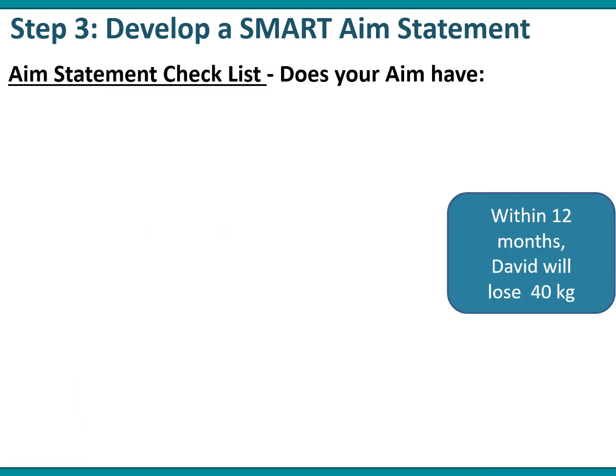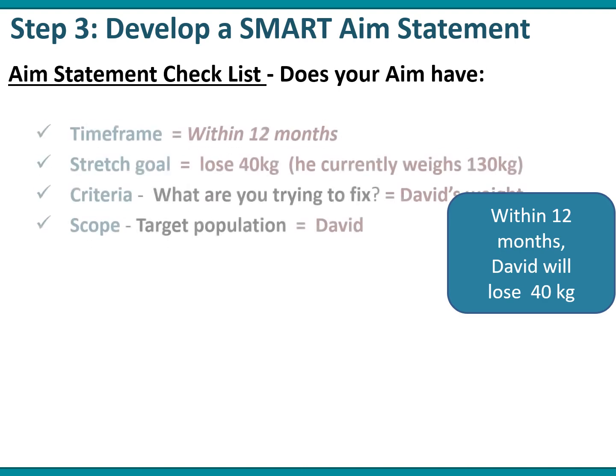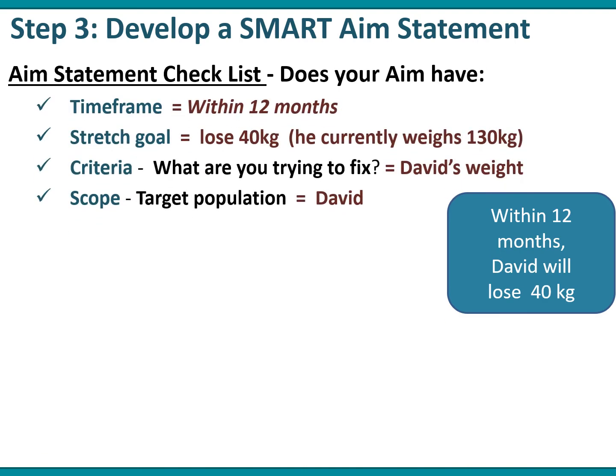With your aim statement, you need to do a bit of a double check. Does your aim statement have a timeframe? Referring to David's aim statement, it's within 12 months — yes, he has a timeframe. A stretch goal? Yes, he has that — he's losing 40 kilos and he currently weighs 130. The criteria is what are you trying to fix — we're trying to fix David's weight. And the scope is the target population, which is David. So it does meet all the checklist items.